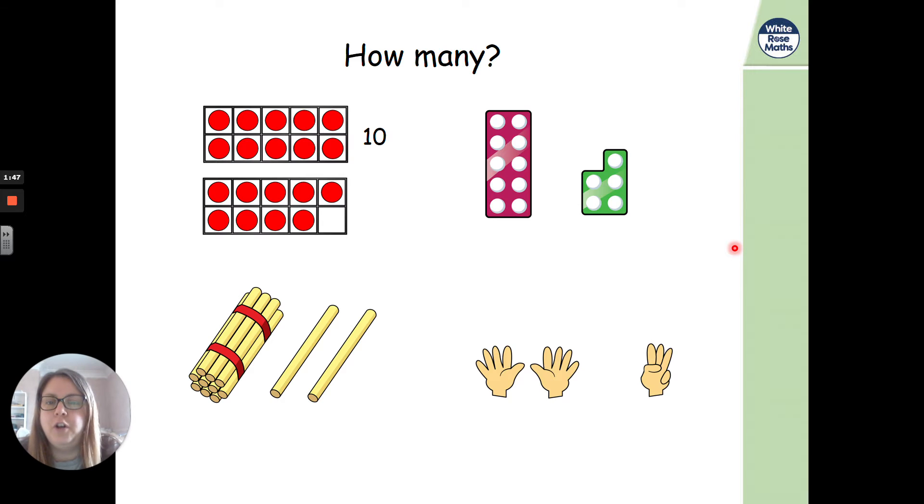So for our 10s frame, we've got 10, 11, 12, 13, 14, 15, 16, 17, 18, 19. Well done if you said that one. For our numicon, we've got 10, and then we've got 11, 12, 13, 14, 15. So we could have counted the spots, or you might have known that was a 5, and to add 5 onto 10.